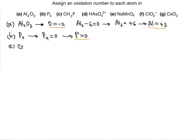The next compound is CH₃F. The element taking precedence here is going to be hydrogen, because carbon is not in group 1A or 2A, but hydrogen is — hydrogen is in the first column of the periodic table, a group 1A element. So we know hydrogen has an oxidation number of plus 1.